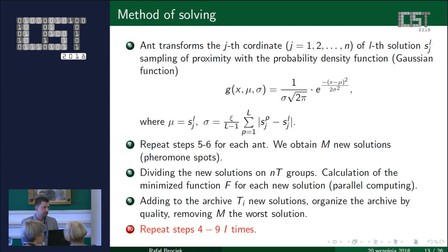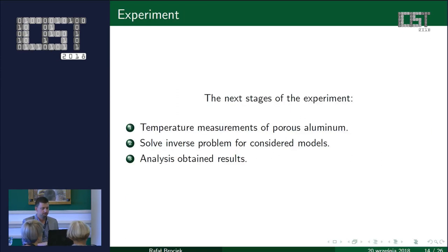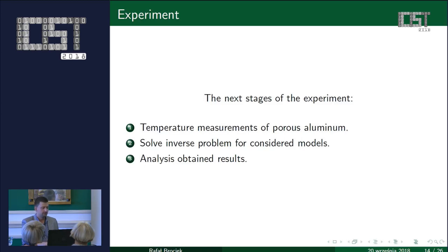Now let me show you the results and stages of the experiment. First, we collected temperature measurements of a porous aluminum sample. Next, we solved the inverse problem by applying the ant-colony optimization algorithm. Third, we analyzed the obtained results and compared the two models.